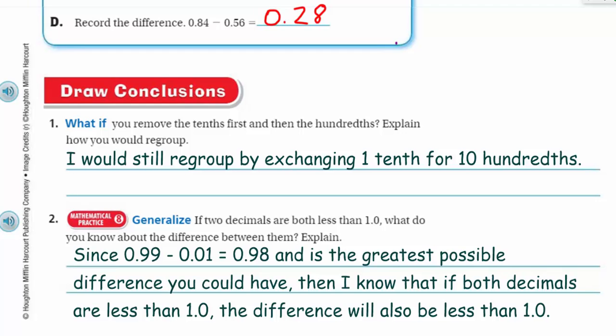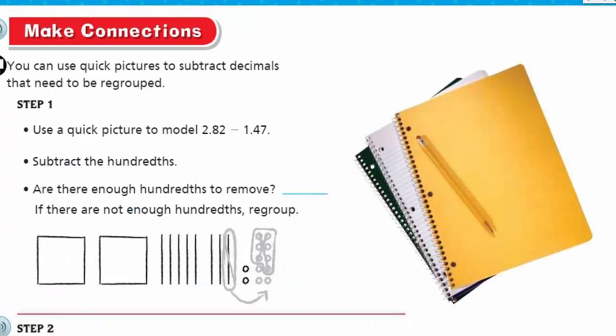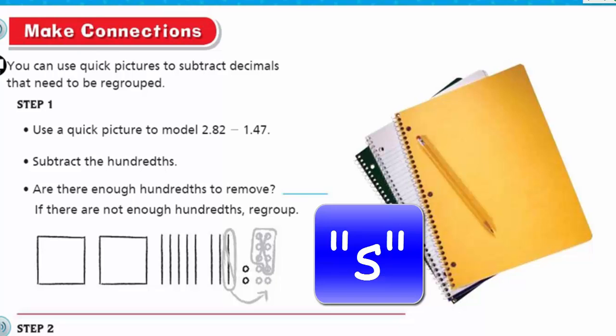Now I think it's time to move on to the next page. Make connections. It says here you can use quick pictures to subtract decimals that need to be regrouped. I remember this. Quick pictures. Step one. Use a quick picture to model 2 and 82 hundredths minus 1 and 47 hundredths. It sounds like a mission. I will take it on.